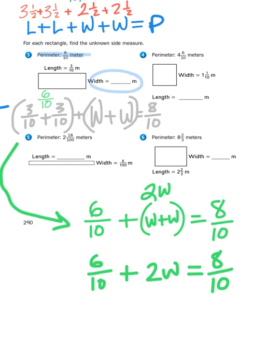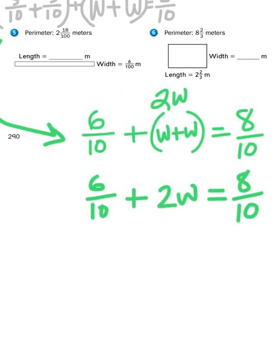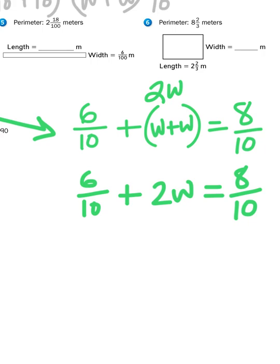So, another way for me to look at this problem, six tenths plus something equals eight tenths. Okay? Is to think about the corresponding subtraction problem. So, I'm going to turn this around. Six tenths plus something gives me eight tenths. Eight tenths minus six tenths is going to give me something. That's my two w.